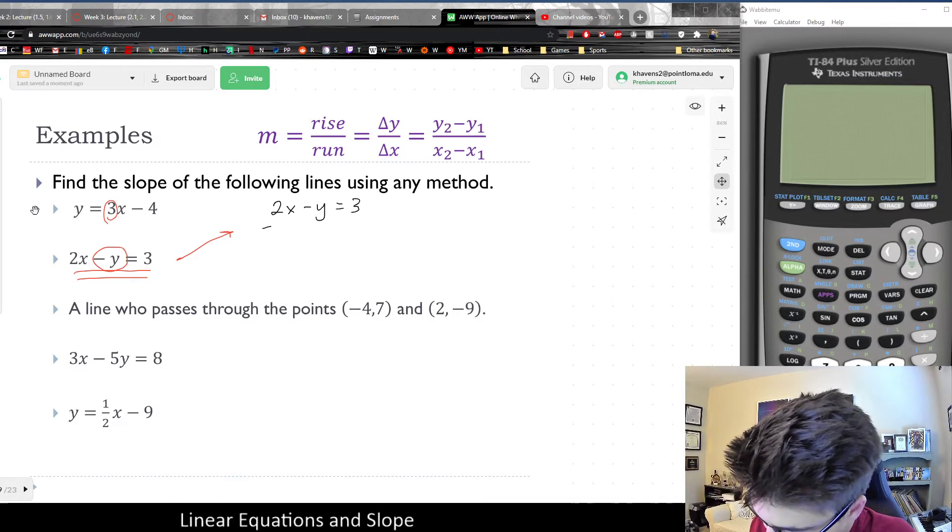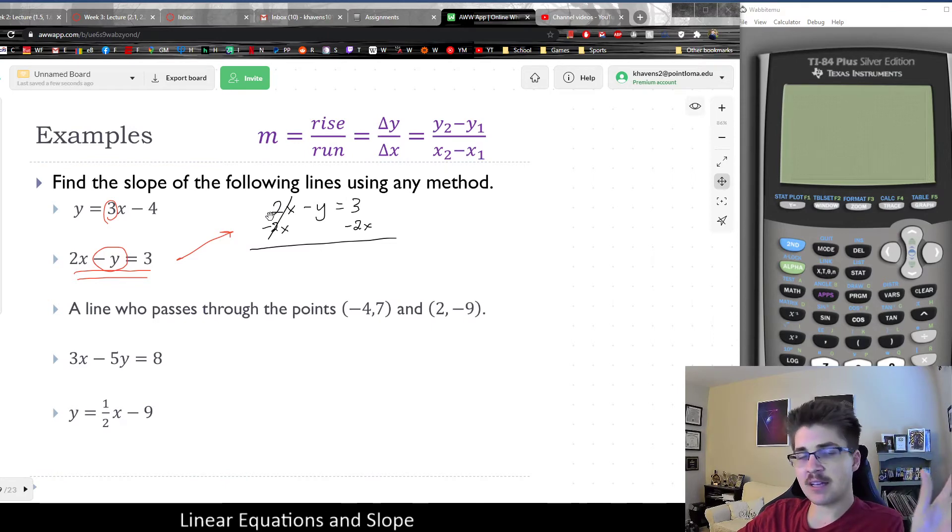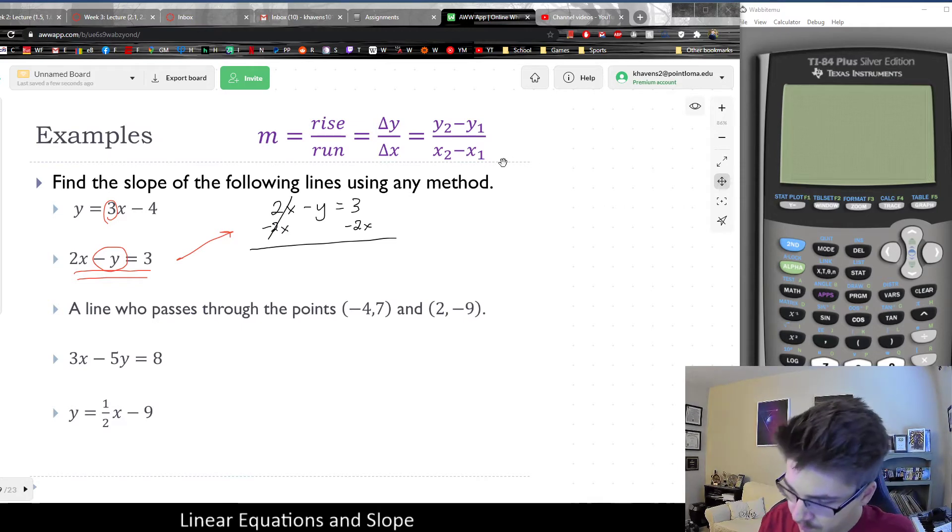And basically, I could subtract 2x from both sides in order to move it away. And remember, I would want to do the whole thing. I don't want to divide by 2 here because that would get rid of the 2 but not the x. Dividing is not what I want to do because really, this is a whole term which is positive. And subtracting it is the only way to cancel a term like that.